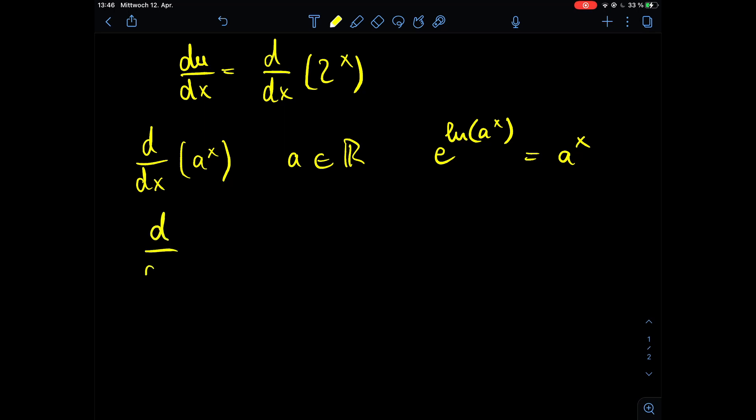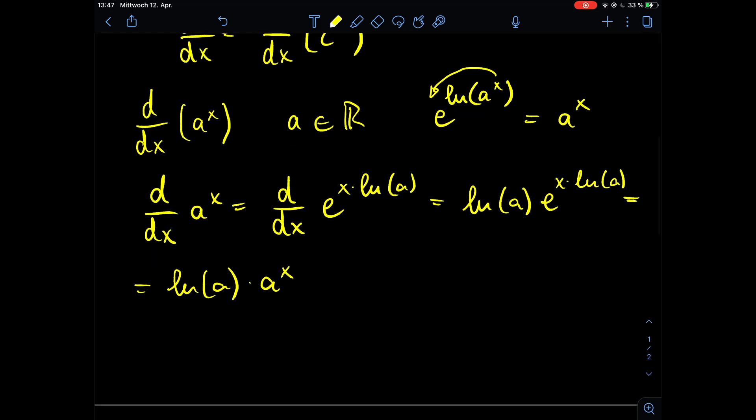So let's see, we have d with respect to dx of a to the power of x is d with respect to x of e times, now we get the x out of the logarithm, x times natural log of a. So now we can take the derivative with respect to x which is, with the chain rule, just the natural log of a times e to the power of x times the natural log of a, and this is the natural log of a times a to the power of x. So this is the solution for our derivative.